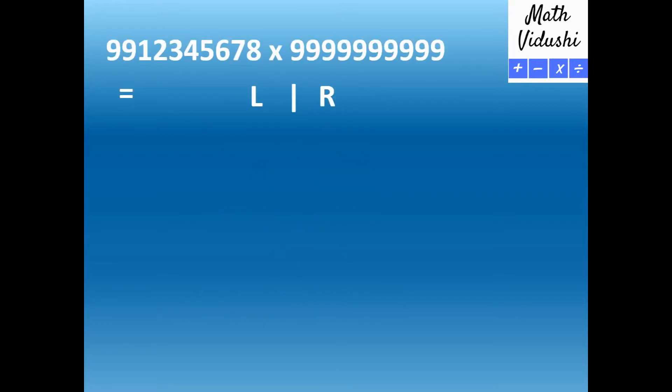Do you recognize this number from the channel promo? We considered 9912345678 as a mobile number and we multiplied it with 10 9's. Since both the numbers have 10 digits each, this case applies. So we can get 9912345678 minus 1 is 9912345677.